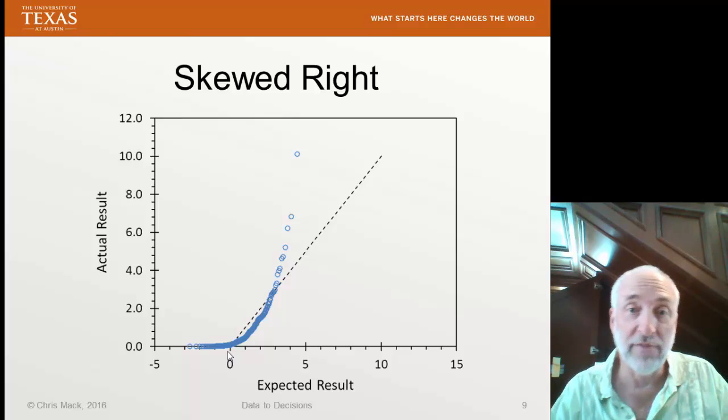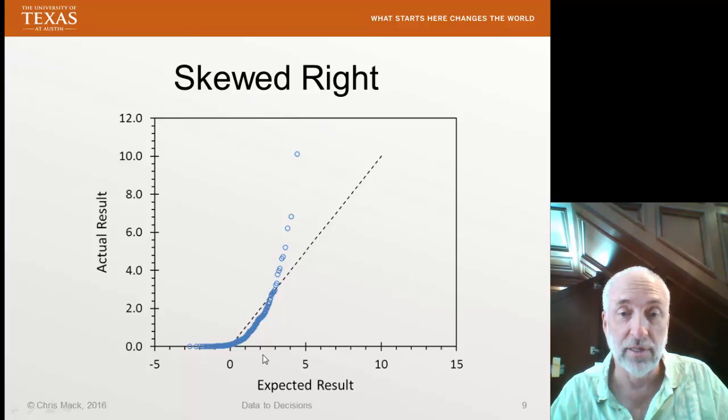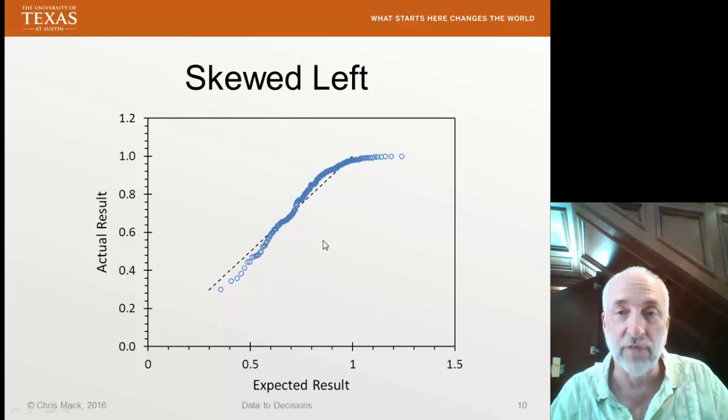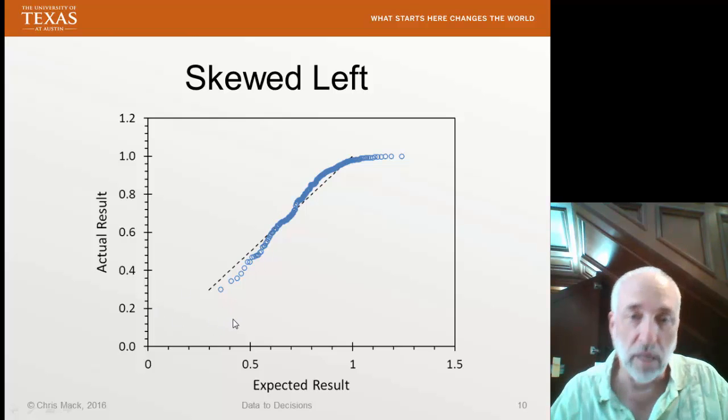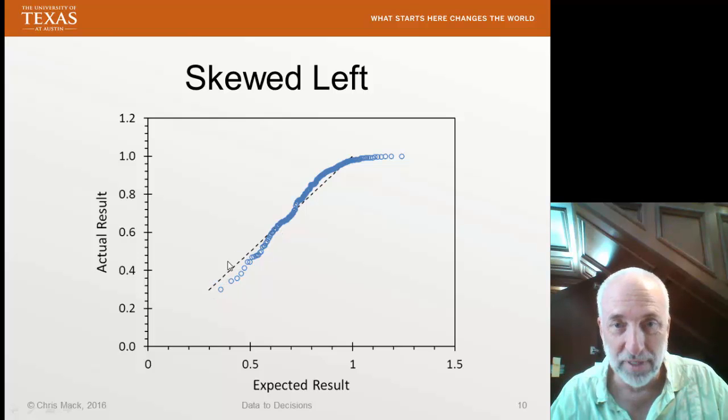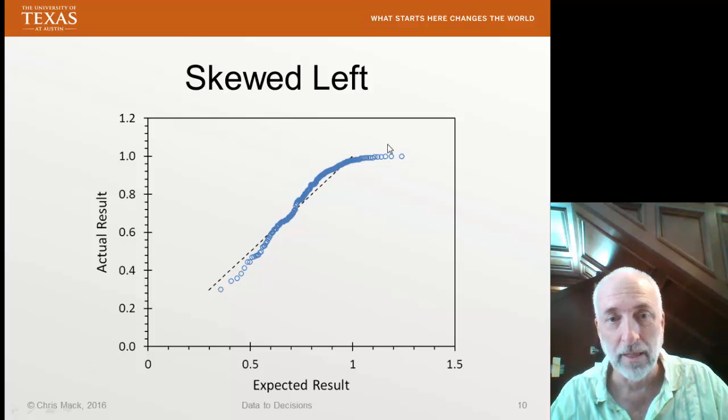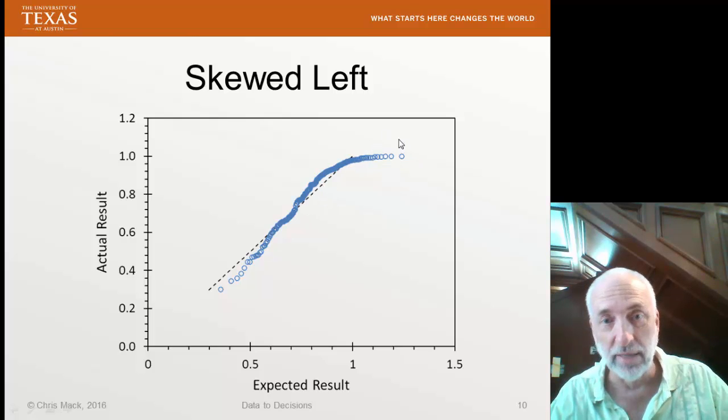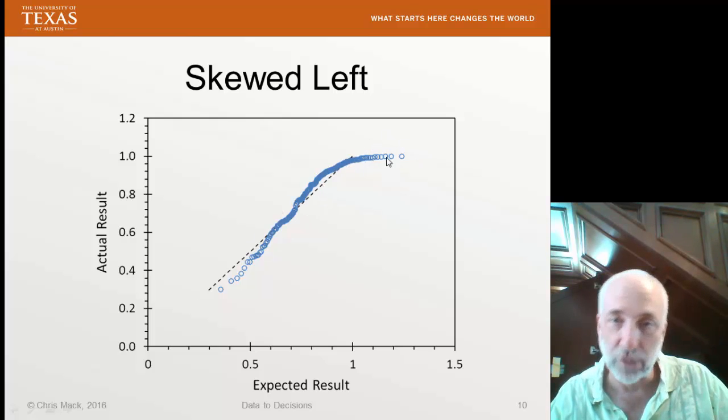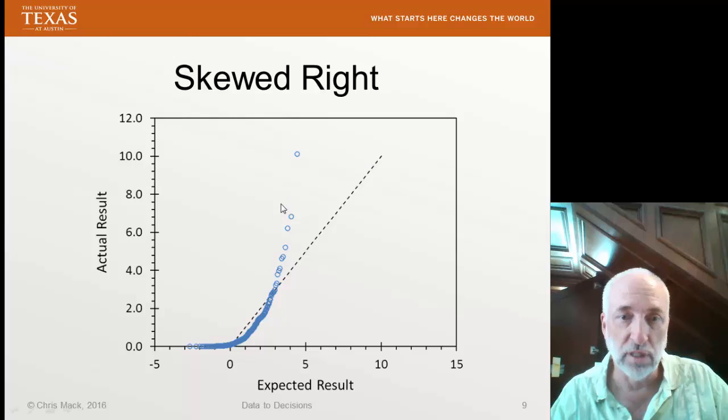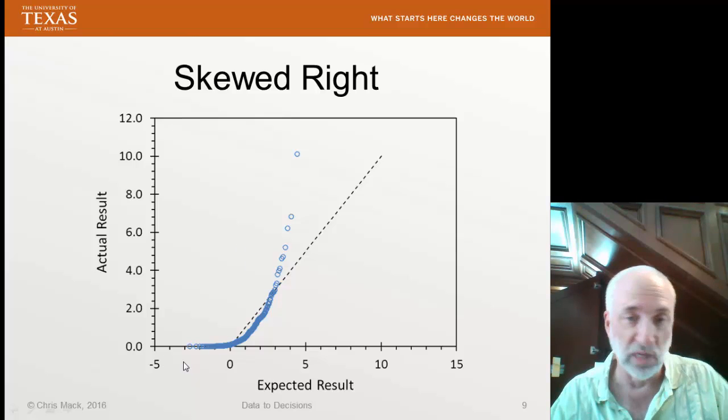So here's a skewed right, I have heavy tails on the right, light tails on the left. And if I'm skewed left, I have light tails on the right, and the heavy tail exists over here on the left. So I'm below the expected value on the right, but it has kind of a curve shaped like this, as opposed to the skewed right, which has this curve shaped like this, where you can see they're both above.